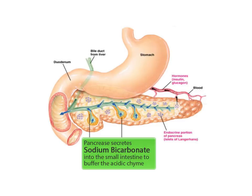Enzymes in the small intestine function optimally at a pH of about 8.5, so the acidic chyme entering the small intestine must be buffered. The pancreas secretes a buffer called sodium bicarbonate into the small intestine to buffer the acidic chyme from a pH of about 2 to a pH of around 8.5.